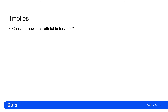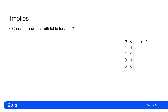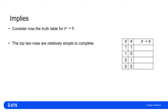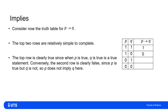We're now going to assess the truth of the statement P implies Q through truth tables. We set up three columns: all four combinations of P and Q — 1-1, 1-0, 0-1, and 0-0 — and the last column assesses whether P is implying Q. For the top row, P is true and Q is true, so P is implying Q. In the second case, P is true but Q is not, so P is definitely not implying Q.